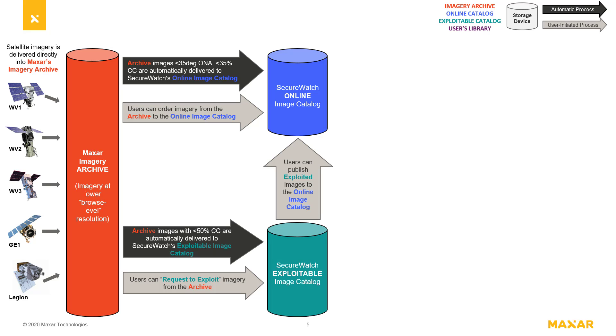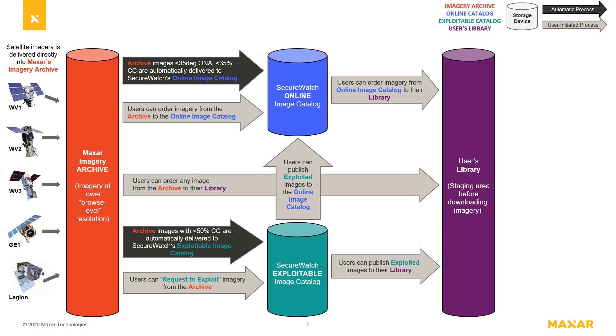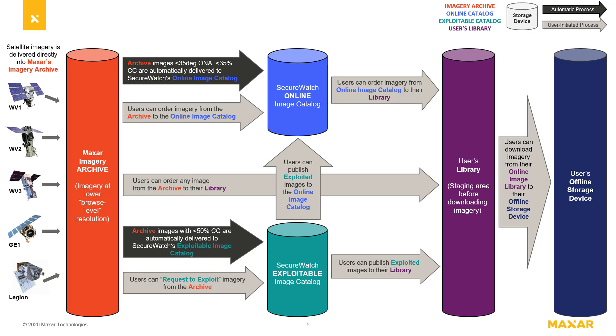If you need to use an image offline, you can order an image from the online image catalog or archive directly to your user library, or publish an image from the exploitable image catalog to your user library. Your library is essentially a staging area before downloading imagery for offline use.